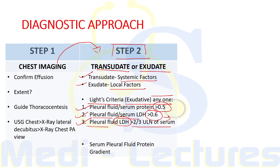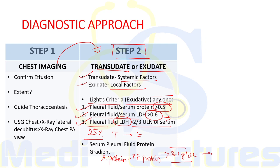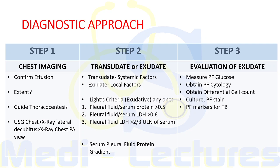Light's criteria is not 100% foolproof — it will misidentify 25% of transudates as exudates. If the criteria are met but the clinical picture is suggestive of transudate (no features like fever), we can calculate the serum–pleural fluid protein gradient. If serum protein minus pleural fluid protein is more than 3.1 g/dL, the effusion is classified as transudative even if Light's criteria are met.